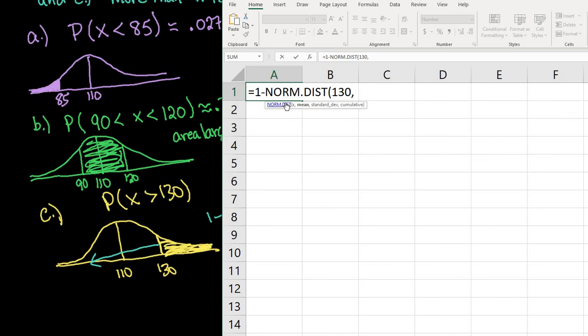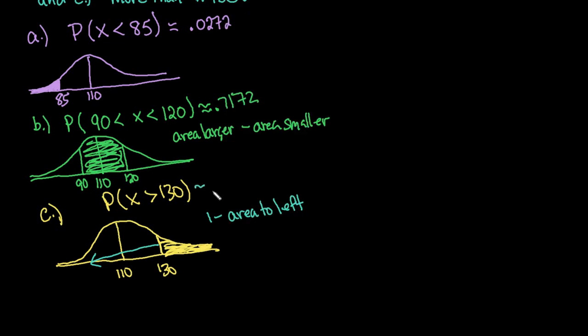The mean is still 110, standard deviation is still 13, and we still want true. We want the cumulative distribution from negative infinity up to 130, subtracting from one to get the area to the right. When I hit enter, 0.0620 is the area.